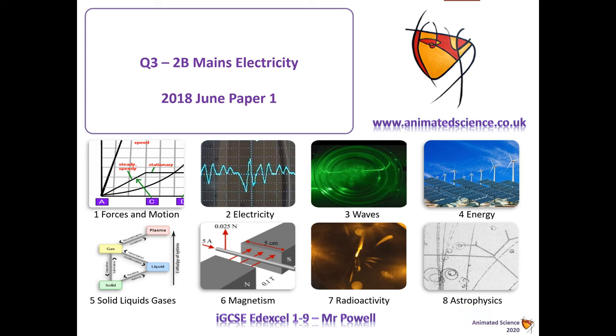Okay, so we're looking at question 3 part 2B, mains electricity of 2018 June paper 1 from IGCSE physics 1 to 9. We're looking through how the exam questions work, so let's have a look at what we've got.